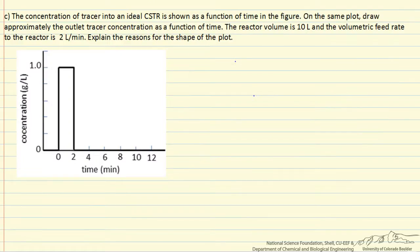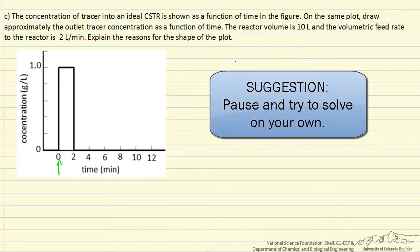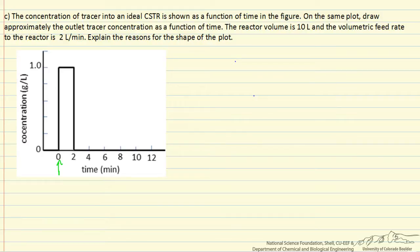In this problem, we're looking at a tracer problem with a qualitative solution. We feed tracer into an ideal CSTR with a step function input, so the concentration at time equals zero jumps up to one gram per liter. We feed that for two minutes, then turn off the tracer. Draw approximately on this same plot what the outlet tracer concentration looks like as a function of time. The reactor volume is 10 liters, and the volumetric feed rate is 2 liters per minute, which means the residence time τ is volume over volumetric flow rate, which is 5 minutes. So if we're only adding tracer for 2 minutes, we don't reach a maximum in tracer concentration before we stop the flow.